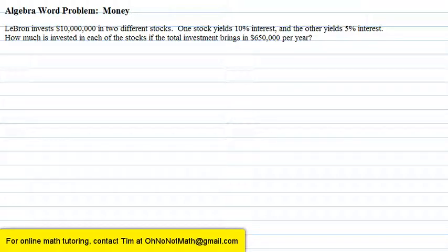LeBron invests $10 million in two different stocks. One stock yields 10% interest and the other yields 5% interest. How much is invested in each of the stocks if the total investment brings in $650,000 per year?